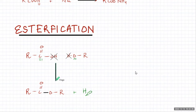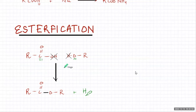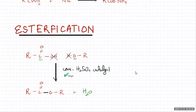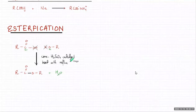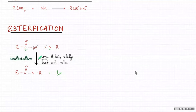Remember it's a reversible reaction, so it can happen in both directions. That means you need concentrated sulfuric acid as a catalyst, and you would heat with reflux. That's your condensation reaction - the formation of esters.